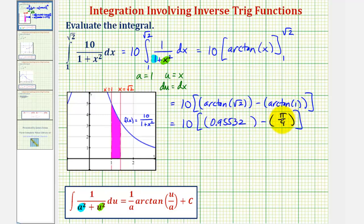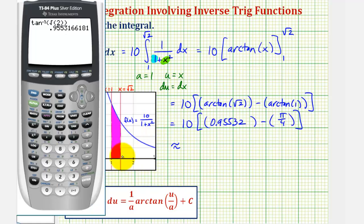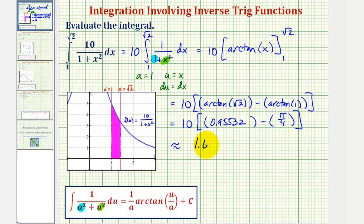And again, arctangent one is pi over four radians. So we have ten times the quantity point nine five five three two minus pi over four radians, which gives us an approximate value of one point six nine nine two, which would be the approximate area of the shaded region.